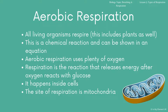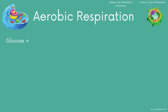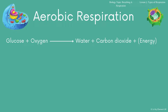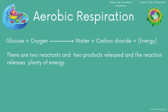You need to know the word equation. We start with glucose, which reacts with oxygen — those are the reactants — and that releases water, carbon dioxide, and energy. Energy is in brackets because it is not made; it is a product of the reaction but it is released. So two reactants, two products, and plenty of energy is released.